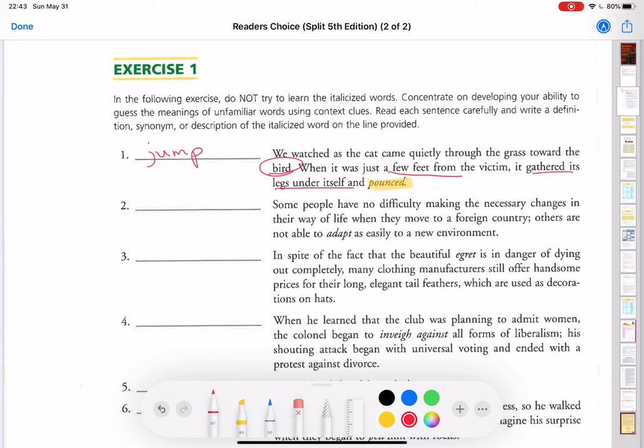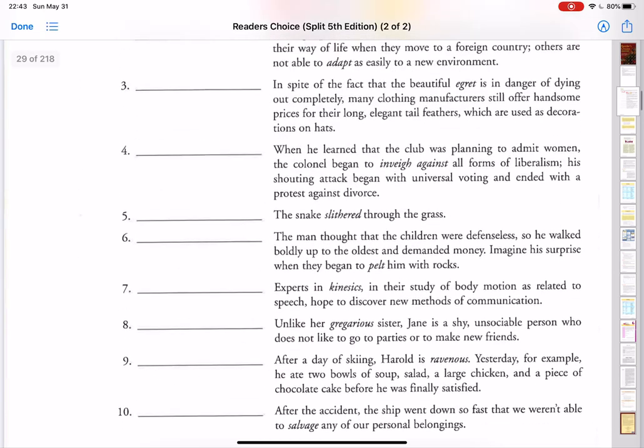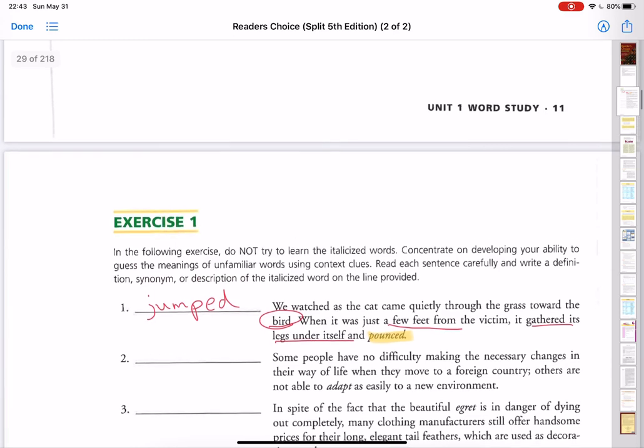So I can guess that a good synonym or description of the word pounced might be something like jump, or if we use the past tense form, jumped. So I'd like for you to try the rest of these on your own, and then when you're ready, check the answer key.